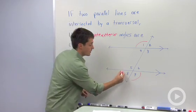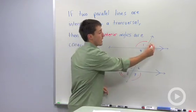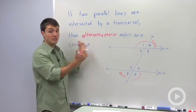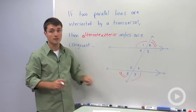And angles 8 and 2, which are on opposite sides, are also going to be congruent. 'Alternate' means on different sides of the transversal, and 'exterior' means on the outer part of the parallel lines.